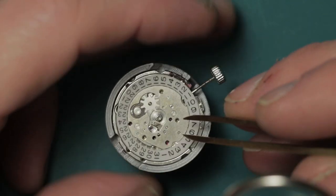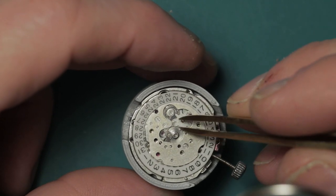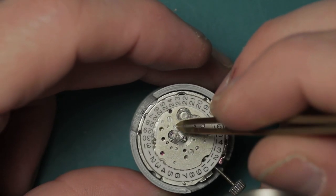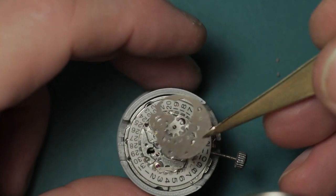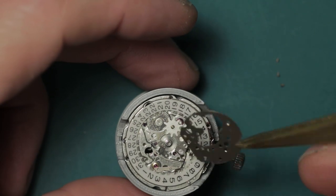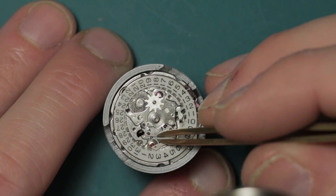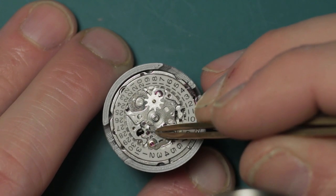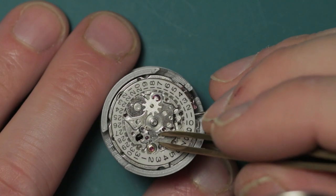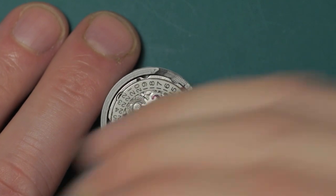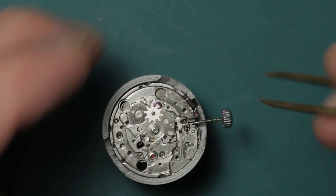And with those removed, the plate lifts away. The calendar wheel jumper spring can then be removed, along with the day wheel star jumper spring and the calendar wheel.